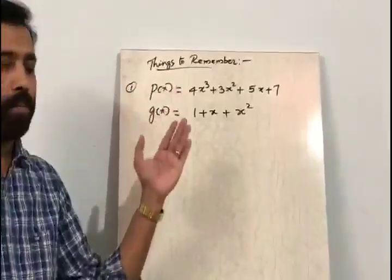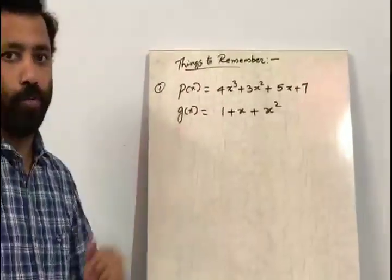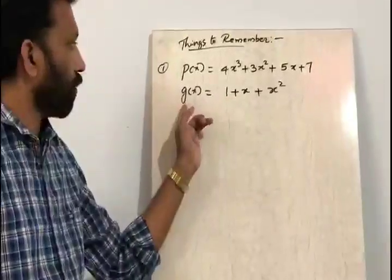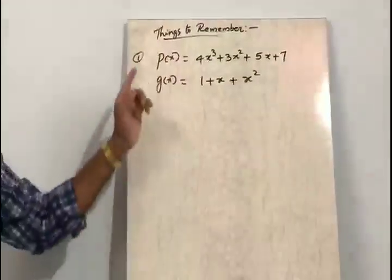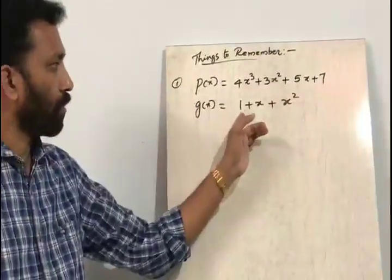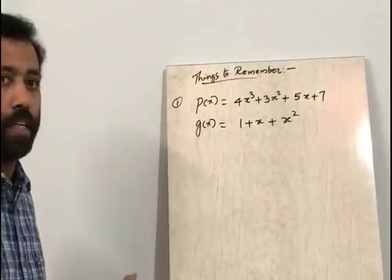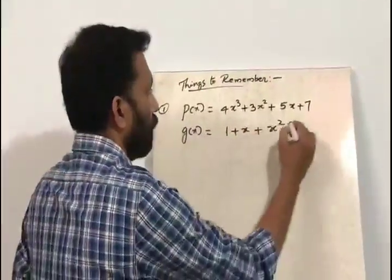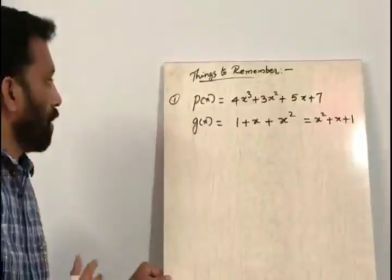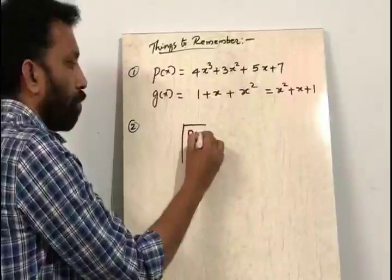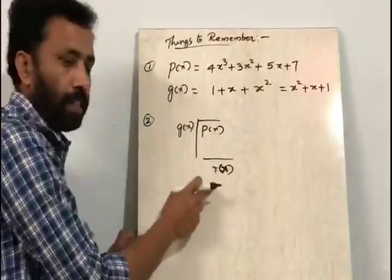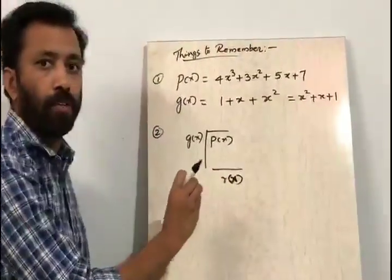What are the important things to remember while doing the division of polynomials? Here we can see the polynomial p of x is equal to 4x cubed plus 3x squared plus 5x plus 7, and g of x is equal to 1 plus x plus x squared. In p of x, the powers of the variables are in descending order, while g of x should be written as x squared plus x plus 1. That is the first thing. Second, when we divide p of x by g of x and find the remainder, if the degree of r of x is less than the degree of g of x, at that moment we have to stop the division.